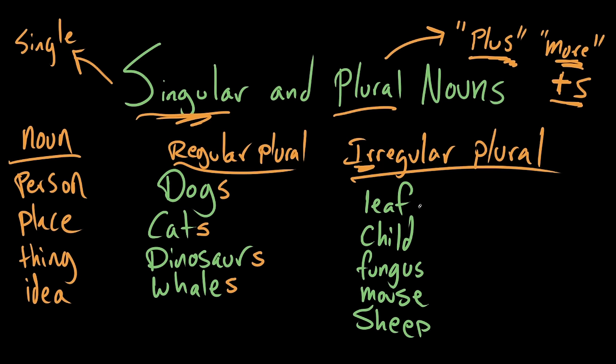So you can't just add an S to these. That's unfortunately not how these nouns work in English. You can't say leafs and childs and funguses and mouses and sheeps.